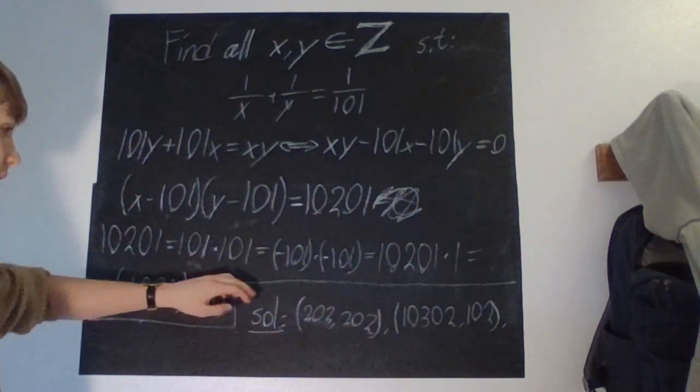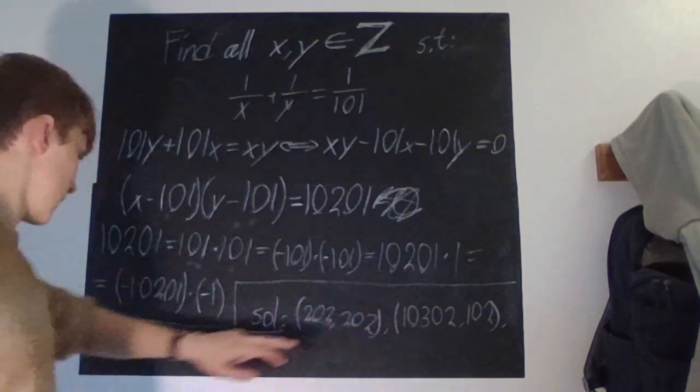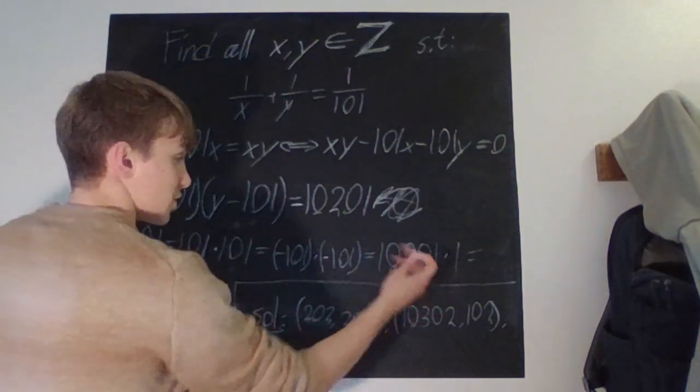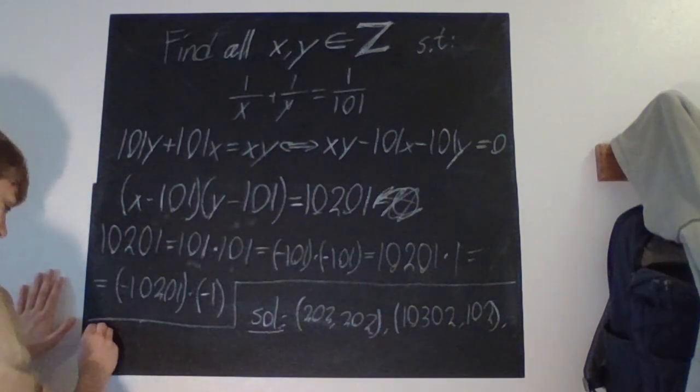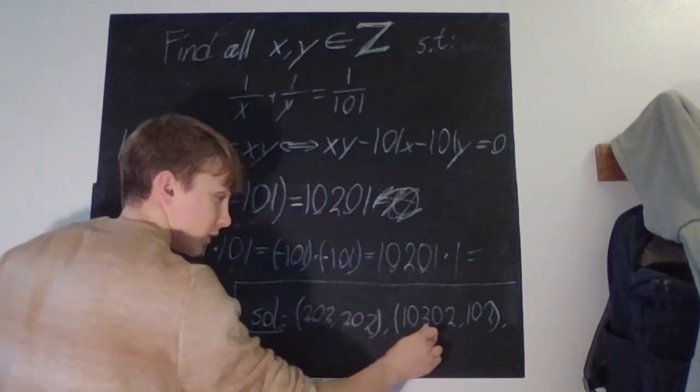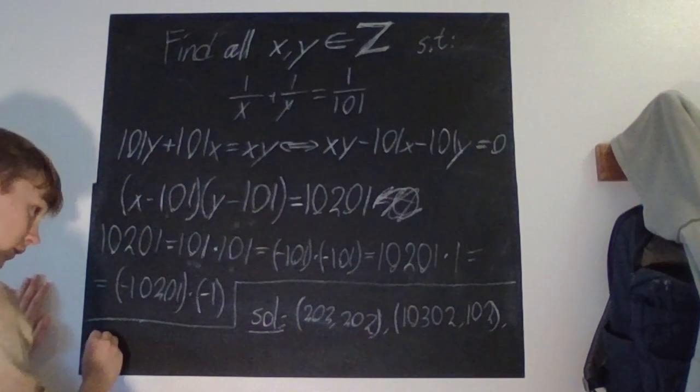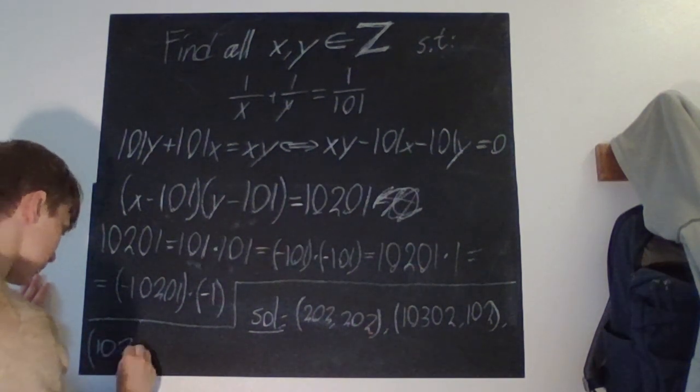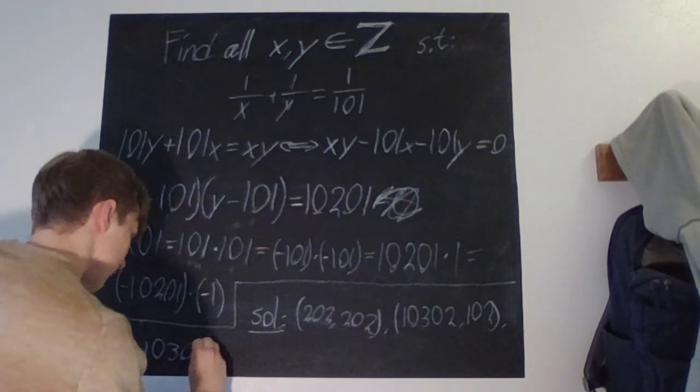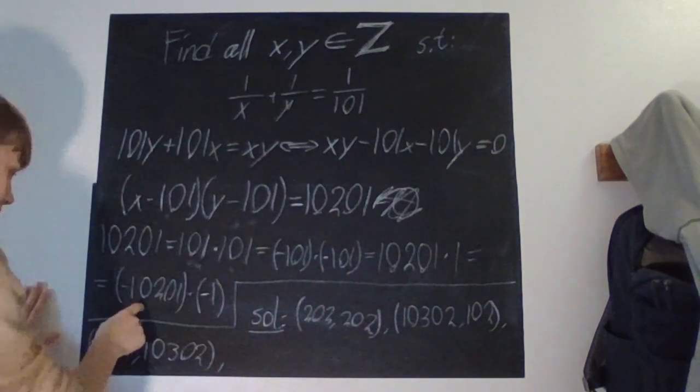We continue over here. So, yes, we were here. Exactly. And obviously, we can just switch the order, right? So, we get the reverse. So, 102 and then 10302. So, we have 102 and then 10302. Yes. So, that's that one.